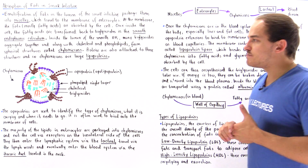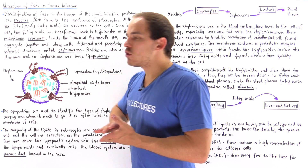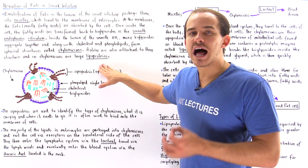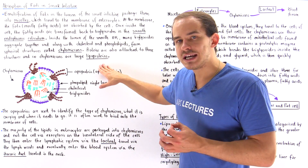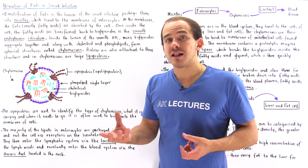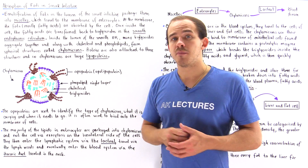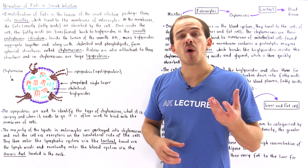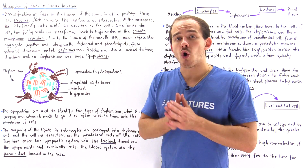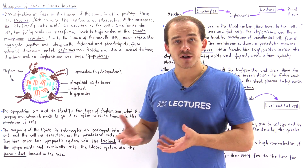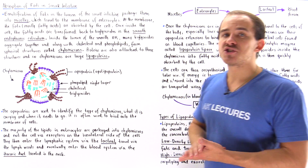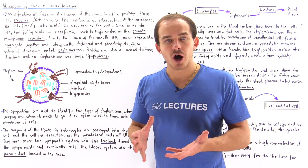The chylomicron is the largest type of lipoprotein. Lipoproteins are molecules that contain protein components as well as lipid components, and they are often used to transport fats inside our blood plasma.